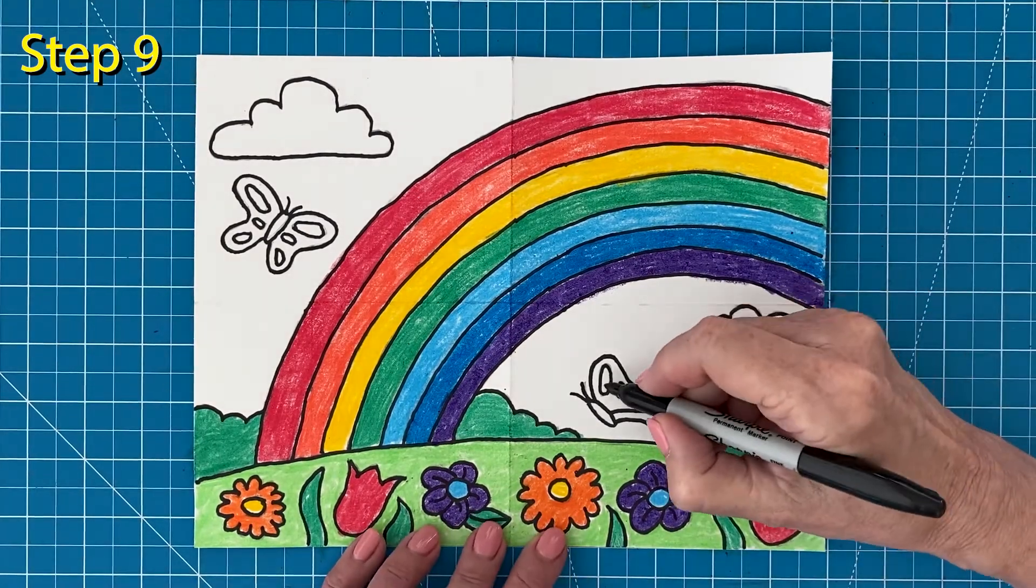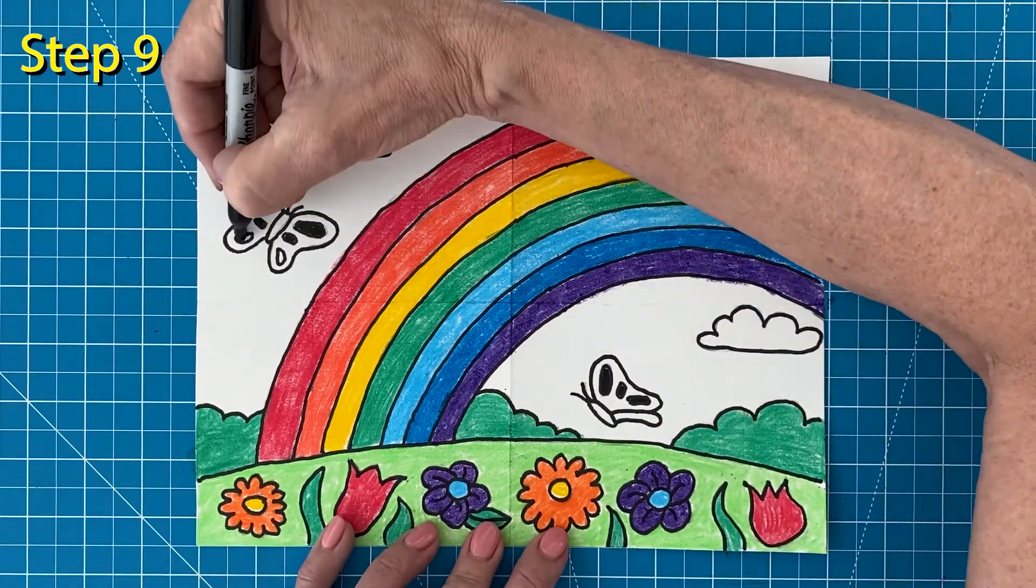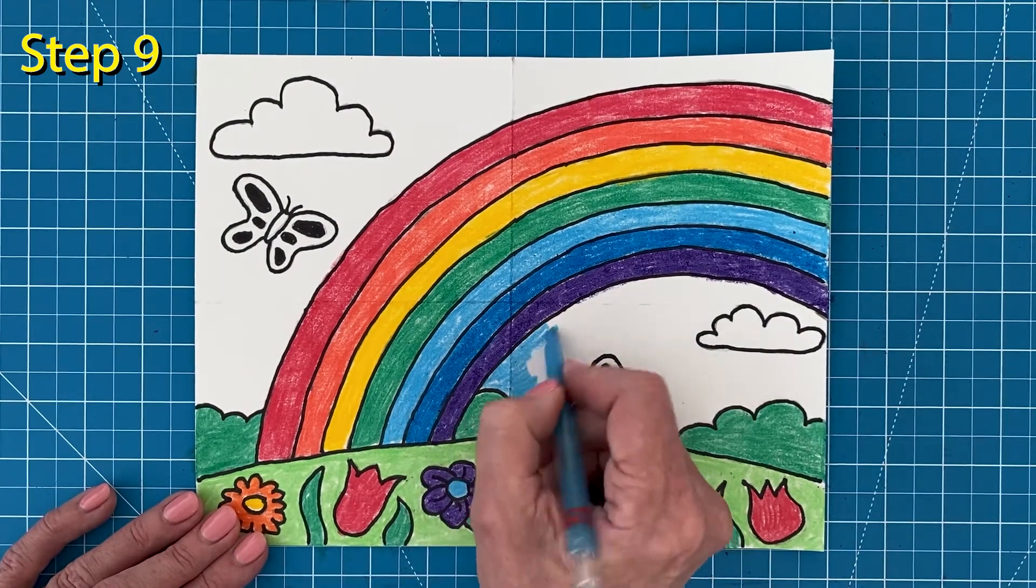Next, black marker spots on the butterflies are easy to do and create lots of contrast. And here comes the light blue for the sky which will really help my rainbow stand out.